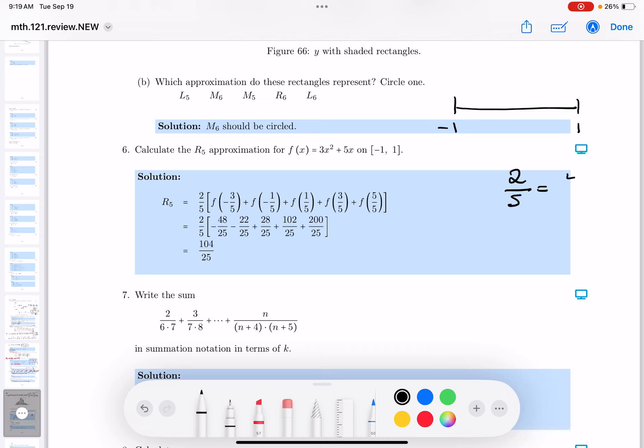I'm going to write this as a decimal. I shouldn't say decimal. I'm going to write this as 4 over 10. If you want, you can say 0.4. It's the same thing. All those numbers are the same.